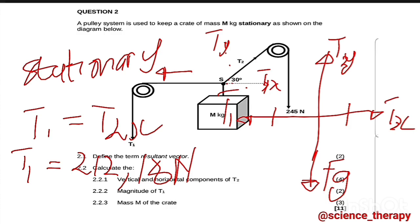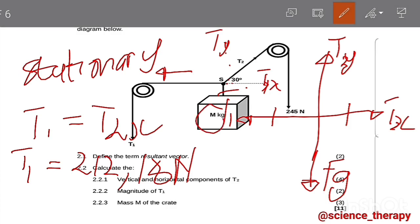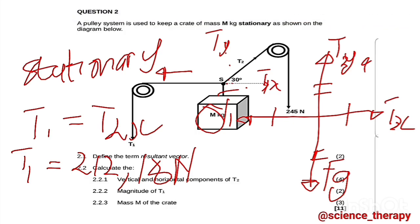Let's move. 2.2.3 says calculate the mass M of the crate. Remember we are not given the mass of the crate, we were just given M which is an unknown value. So now we know also forces in equilibrium, stationary, that means your upward force is equal to your downward force. In this case, that means your T2y is equal to your Fg. Remember we have to extract the mass from Fg, the gravitational force.